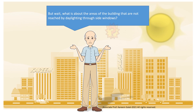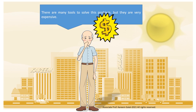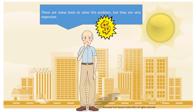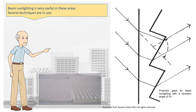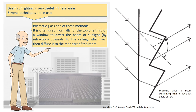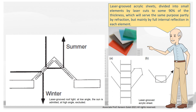What about the areas of the building that are not reached by daylighting through side windows? There are many tools to solve this problem, but they are very expensive. Beam sunlighting is very useful in these areas. Several techniques are in use. Prismatic glass is one of these methods — normally used for the top one third of a window to divert the beam of sunlight by refraction upwards to the ceiling, which will then diffuse it to the rear part of the room. Laser grooved acrylic sheets, divided into small elements by laser cuts to some 90% of the thickness, serve the same purpose — partly by refraction, but mainly by full internal reflection in each element.